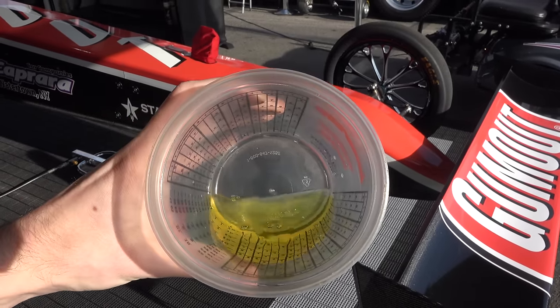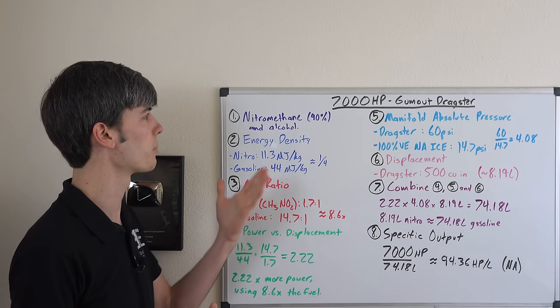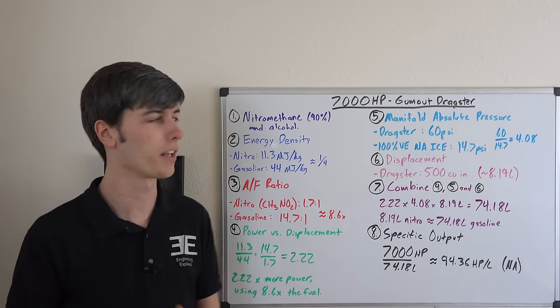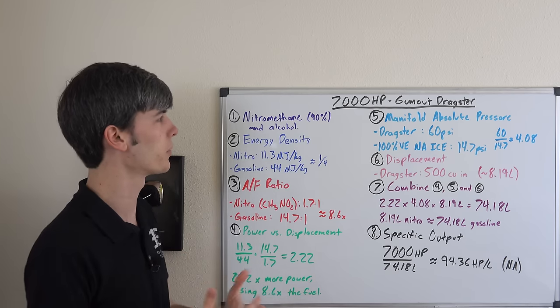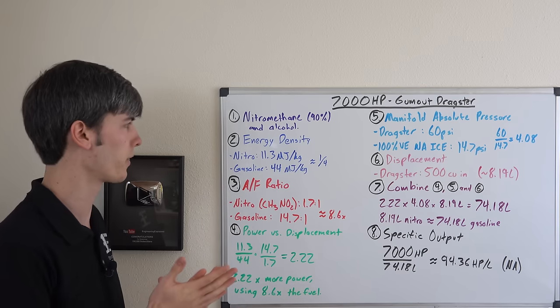The first change between this engine and the engine in your car should you have a naturally aspirated gasoline powered car is that this is using nitromethane. Actually the regulations for NHRA top fuel cars is that they can only use up to 90% nitromethane and then the rest is alcohol. But for the purposes of this video we're just going to be assuming 100% nitromethane.